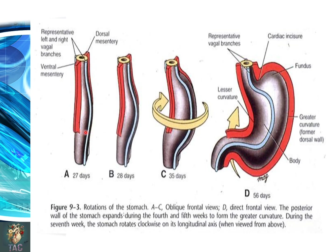The fusiform dilatation initially shows the areas of the stomach. You can see the differential growth rate — this border is growing at a faster rate. And this is the direction of the rotation around the longitudinal axis so that the right border moves posteriorly and the left border moves anteriorly. Because of this rotation, the right vagus nerve, which initially supplies the right side of the stomach, will later on supply the posterior aspect of the stomach.